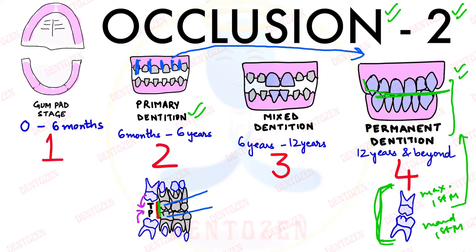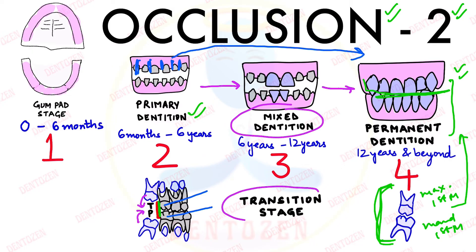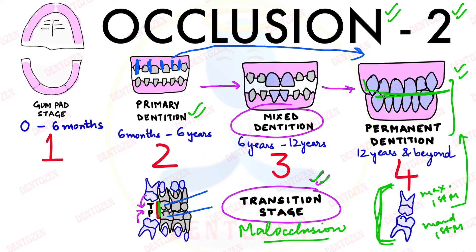Primary teeth are getting changed into permanent dentition in the mixed dentition period, so it is also called the transition stage because major change is happening. There are high chances of something going wrong — high chances of development of malocclusion in permanent dentition if the changes are not proper in the mixed dentition. So it is very important to understand the development of occlusion in the mixed dentition period.